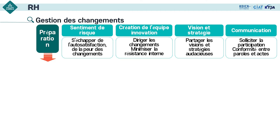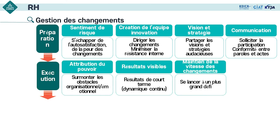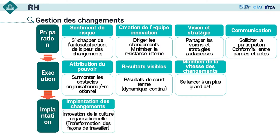Ce sont les étapes de préparation. Ensuite, c'est l'exécution. D'abord, il faut attribuer du pouvoir aux personnes qui exercent le changement et les encourager à passer à l'action, en surmontant les obstacles organisationnels et émotionnels. Il faut montrer des résultats visibles à court terme pour détruire le cynisme. En maintenant la vitesse des changements, on se lance à un plus grand défi. L'étape suivante est d'implanter les changements comme une culture organisationnelle — c'est en réalité une étape pour réformer les pratiques organisationnelles.